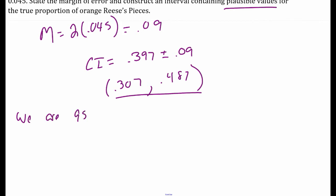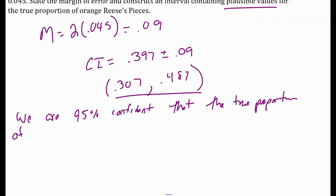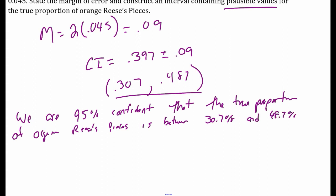We are 95% confident that the true proportion of orange Reese's Pieces is between 30.7% and 48.7%. That's my 95% confidence interval. I took my margin of error — which is two standard deviations — added it onto the mean of the distribution and subtracted it from the mean.